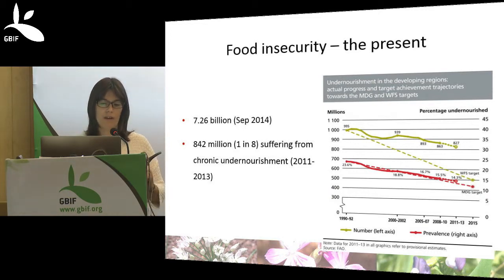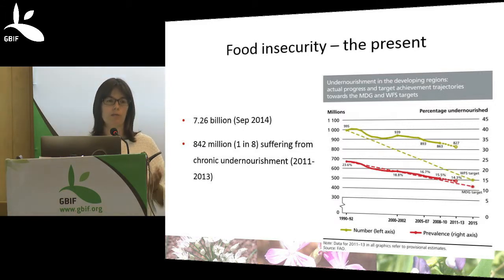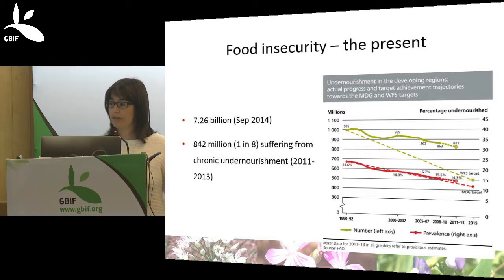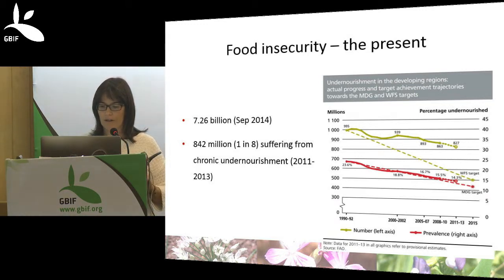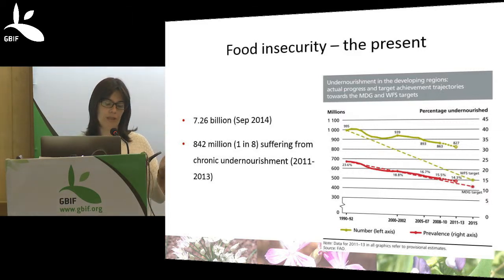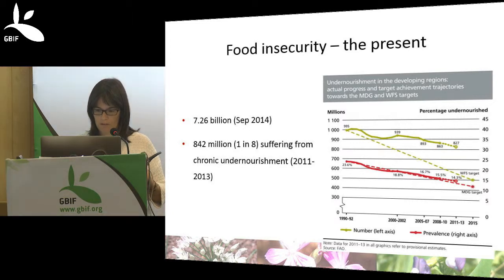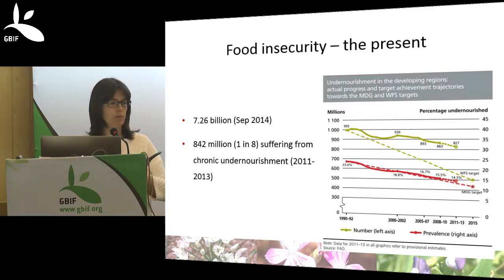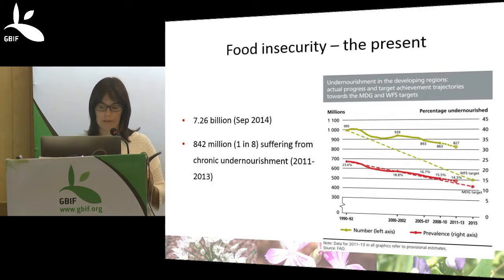Currently the world population is about 7.26 billion and one in eight people are suffering from chronic undernourishment. Undernourishment in developing countries has been decreasing over time, as shown in the graph, but it is barely meeting the goals set by the World Food Summit of around 500 million by 2015, or the Millennium Development Goals target of around 450 million.